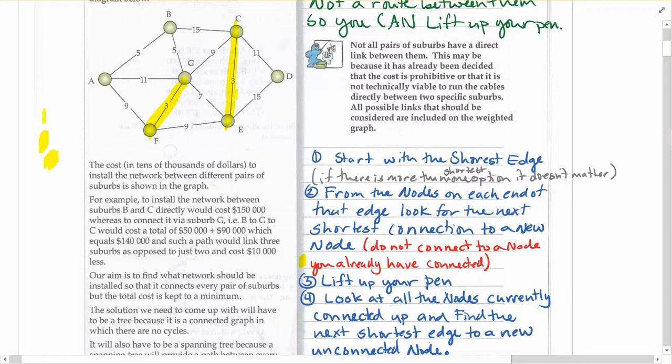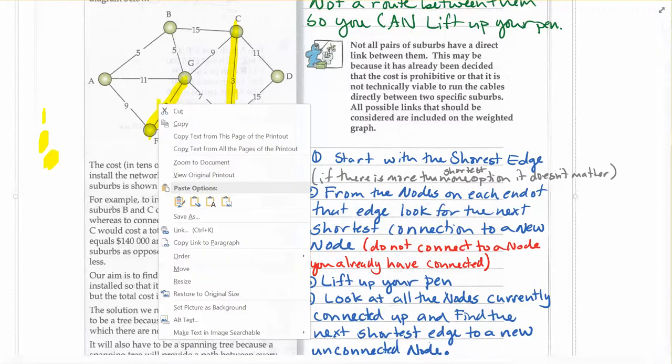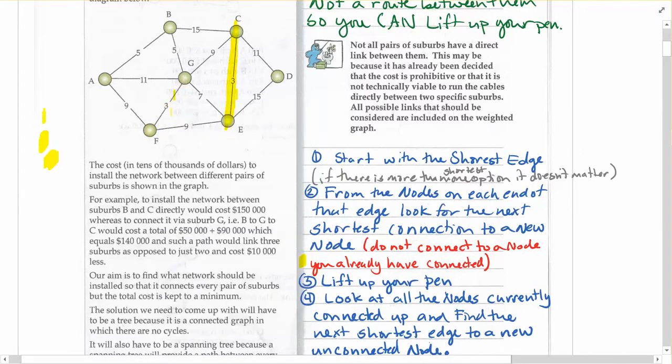So, the whole point of this is you have to build up from what you've started with. So, you would never draw on a new one. Even though 3 is the next shortest available within the entire network, it's not the next shortest that's actually connected to the one you've just put down. So, that's one thing to keep in mind. You have to go from what you've already connected to the network. So, in this case, the next one would be 7.